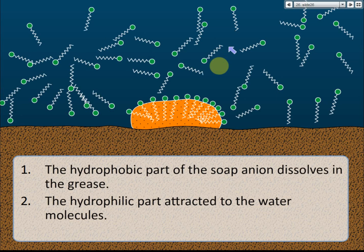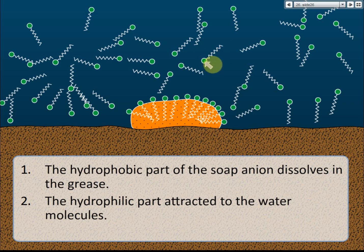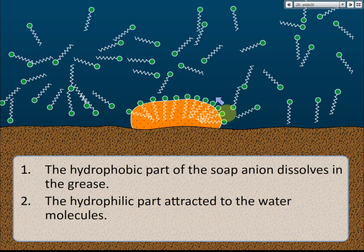The soap ions have a hydrophilic and a hydrophobic part. The circle represents the hydrophilic part, and the long tail represents the hydrophobic part. The hydrophobic part can dissolve into the grease — it hates water but loves organic solvents like grease or oil. So the hydrophobic part of the soap anions dissolves in the grease, while the hydrophilic parts face outward toward the water molecules, remaining on the surface of the grease in contact with water.